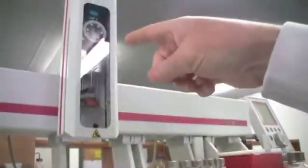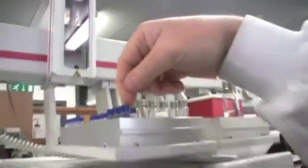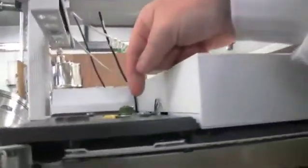This automated system here comes down, takes a representative aliquot and injects it into this gas chromatograph. Inside the gas chromatograph, it actually will then separate each one of the compounds on a series of different columns.